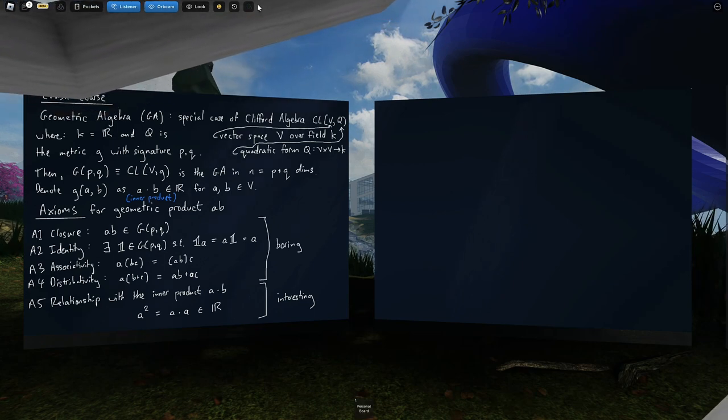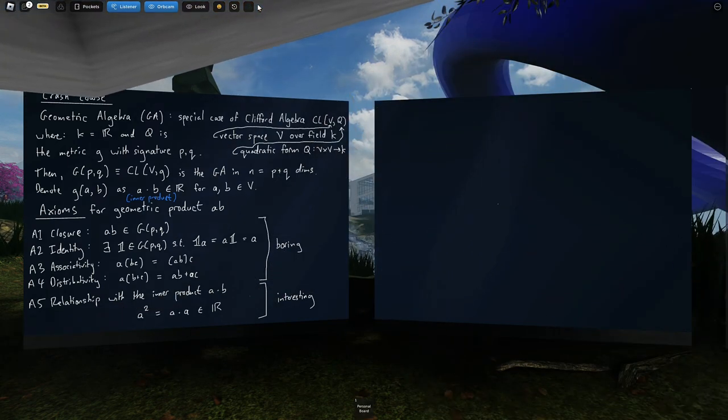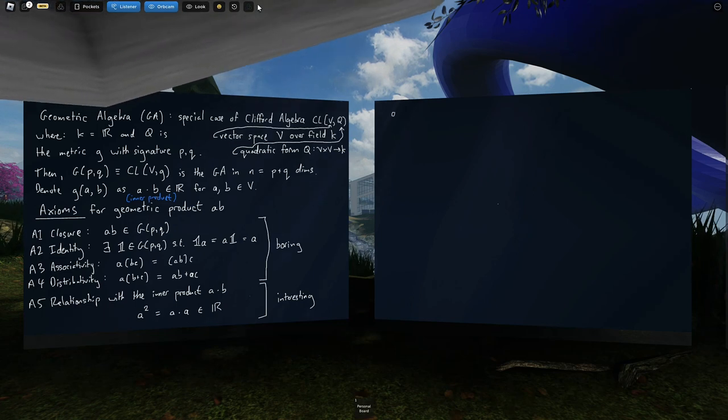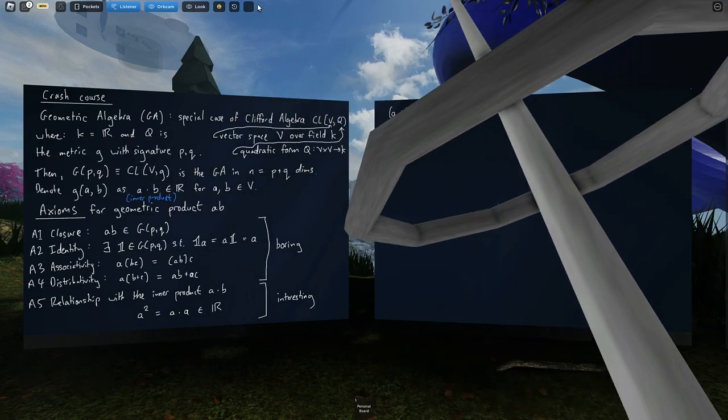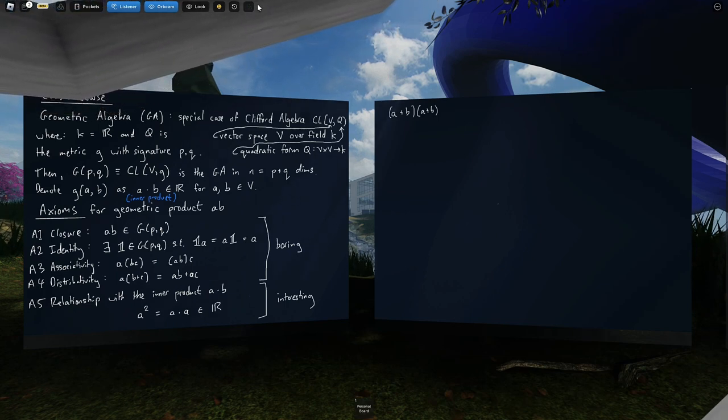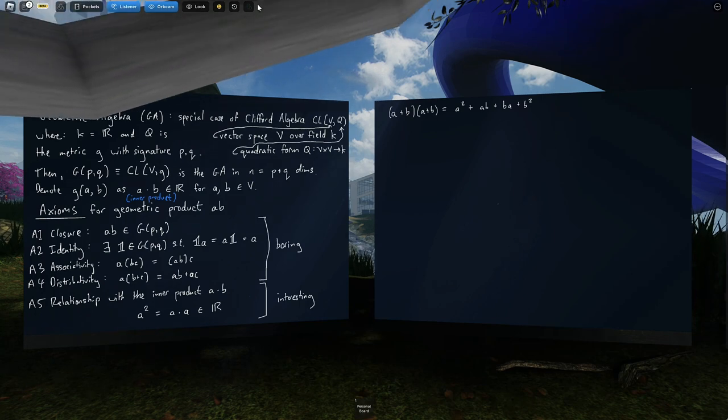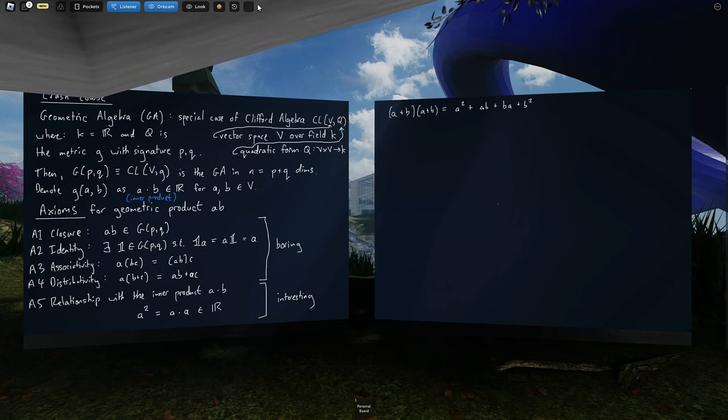So if the geometric product of any vector with itself is a scalar, a real number, then I can take the inner product of a+b with itself. And by distributivity, I get a² + ab + ba + b². There's no commutativity axiom on the previous board. Vectors don't necessarily commute in this algebra, hence those two middle terms kept separate.